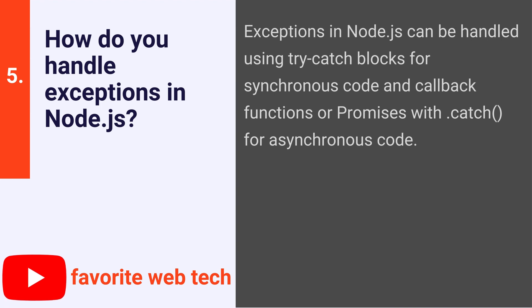How do you handle exceptions in Node.js? Exceptions in Node.js can be handled using try-catch blocks for synchronous code and callback functions or promises with .catch for asynchronous code.